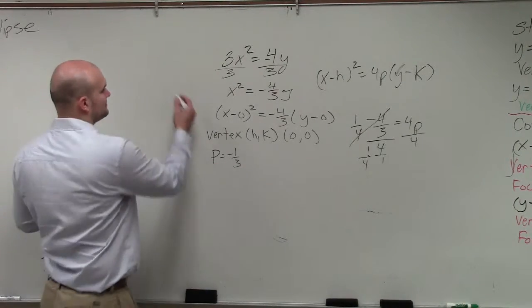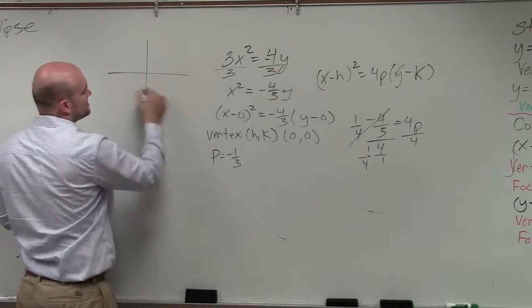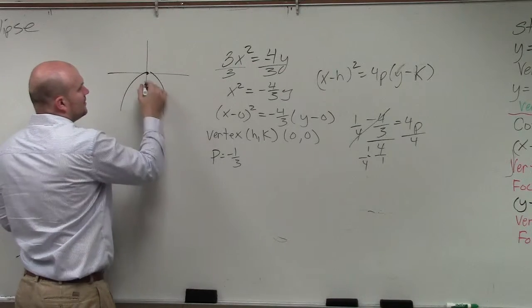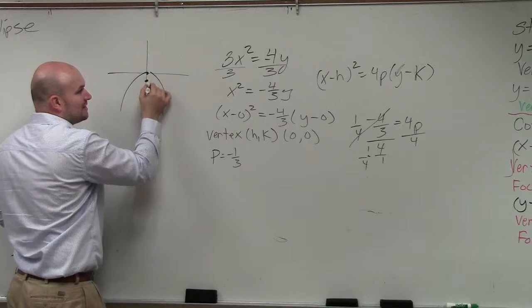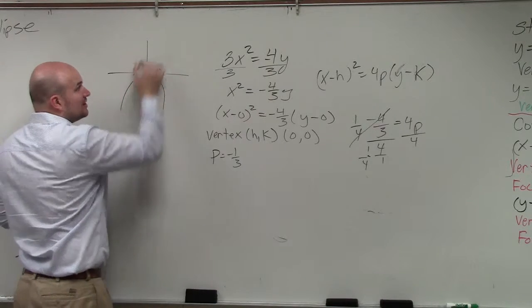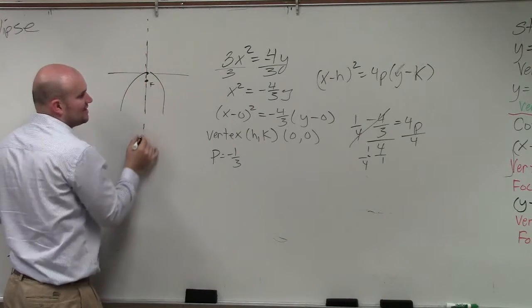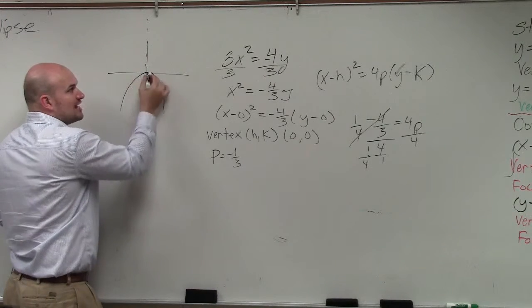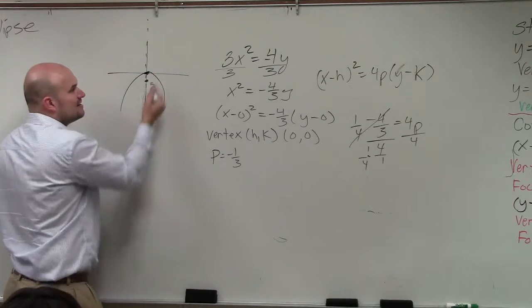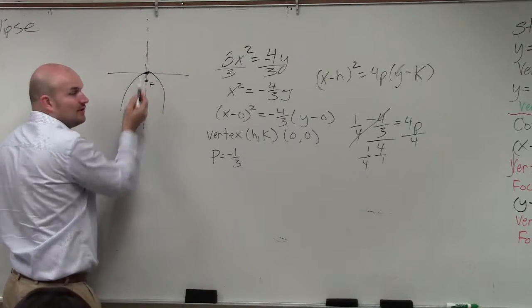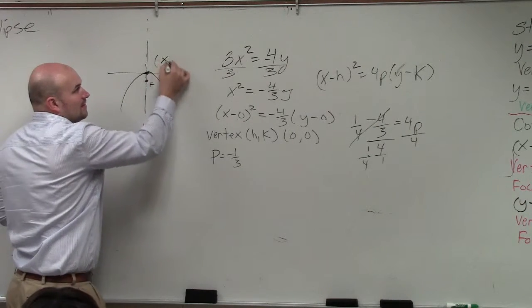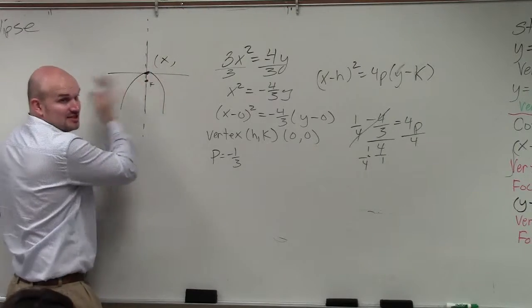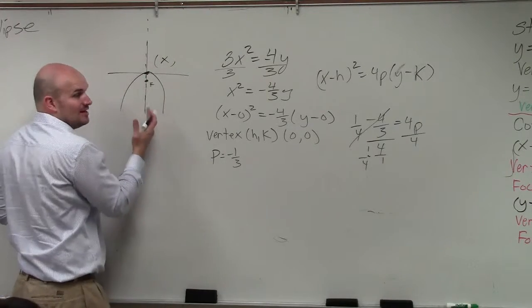So the one thing I wanted to tell you guys is the vertex here. Now remember, if the focus is down negative 1 third, remember that the vertex and the focus are on the axis of symmetry, right? So which coordinate do they share? Does the focus and the vertex share? The x-coordinate, right? Because they're the same left or right. So they're on the same x-coordinate.